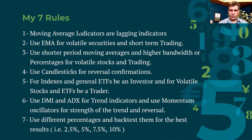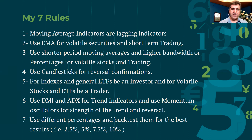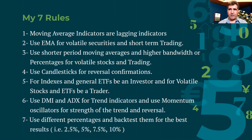In conclusion, here are my seven rules for using moving average envelopes. Rule one: remember that moving average indicators, including envelopes, are lagging indicators - they're looking back 20 days, just telling us where we've been. Because of this, you want to use other oscillators and momentum indicators like stochastics in combination.